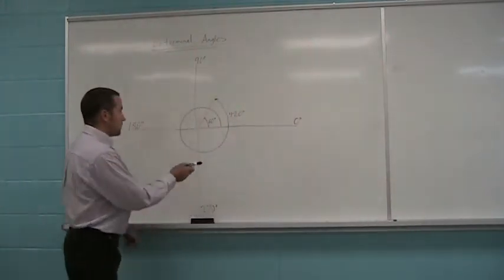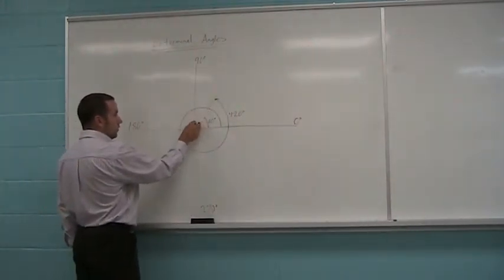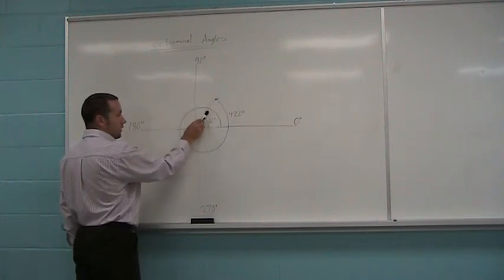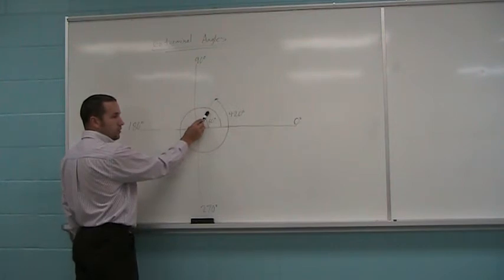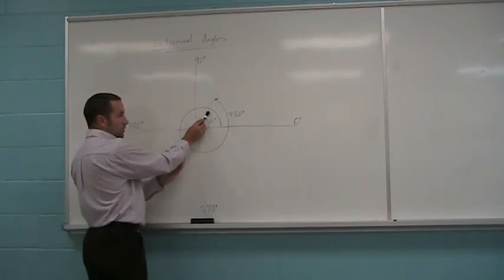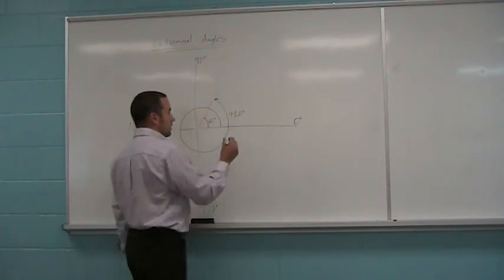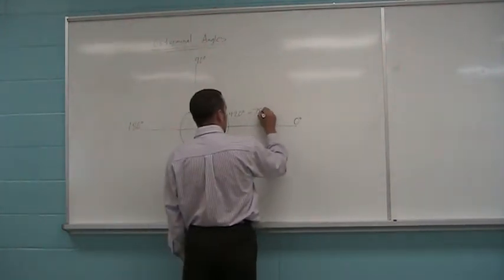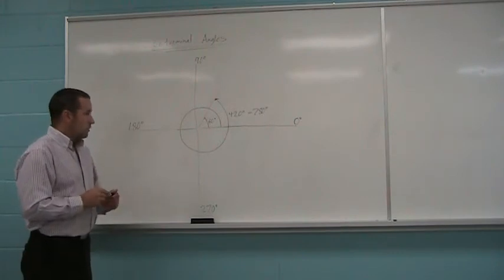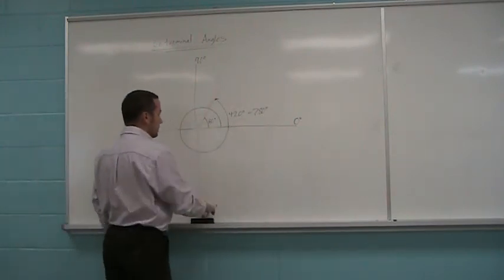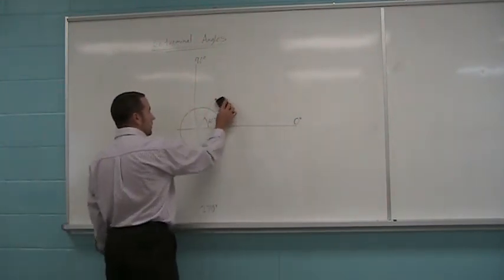We could keep doing this forever as well. I could go around once, there's 420. I could do it another time. If I did it another time, I've gone another full 360 degrees. Add 360 to that. 780 degrees is also coterminal. So there's two coterminal angles with 60 degrees. Let's look at it another way.